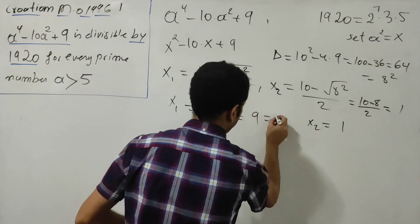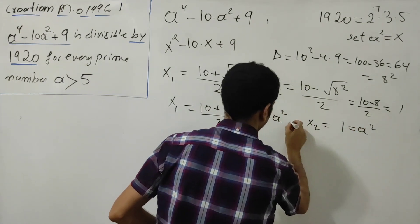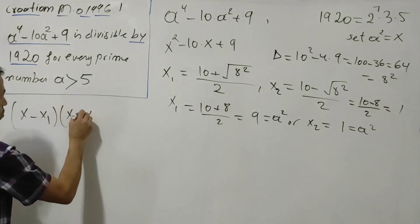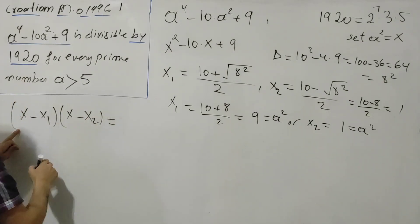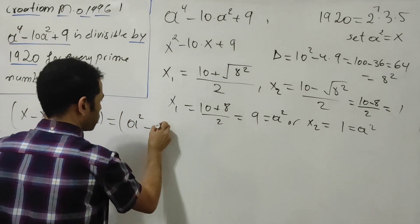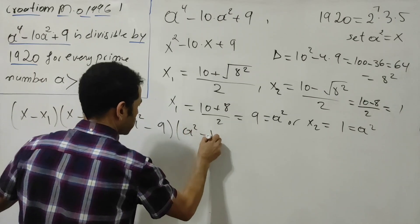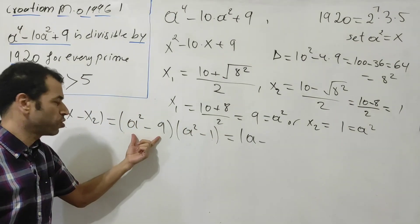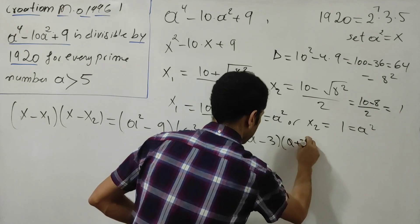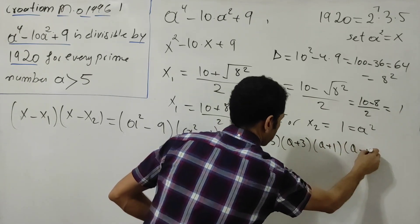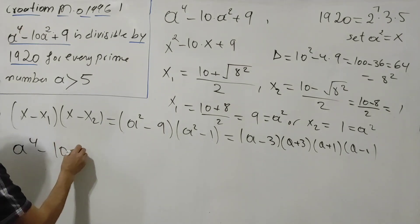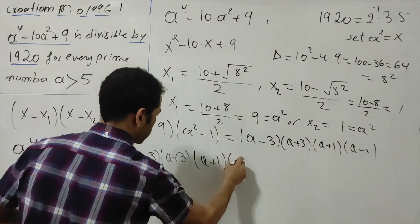So x₁ equals 9, meaning e squared equals 9, and x₂ equals 1, meaning e squared equals 1. The factored form becomes (x minus x₁)(x minus x₂), which is (e² minus 9)(e² minus 1). I now have differences of two squares, so factoring further gives (e minus 3)(e plus 3)(e plus 1)(e minus 1). Therefore, e to the fourth minus 10e squared plus 9 equals (e minus 1)(e minus 3)(e plus 3)(e plus 1).